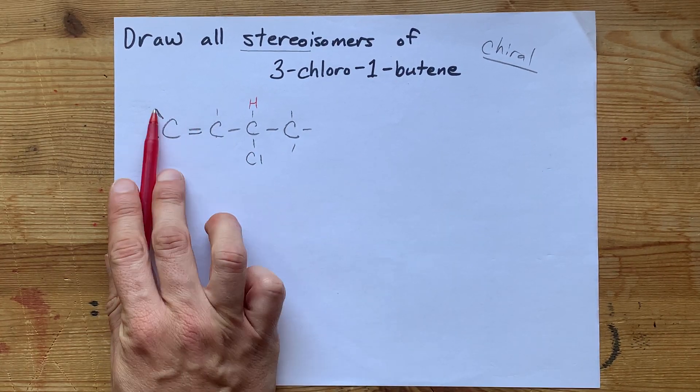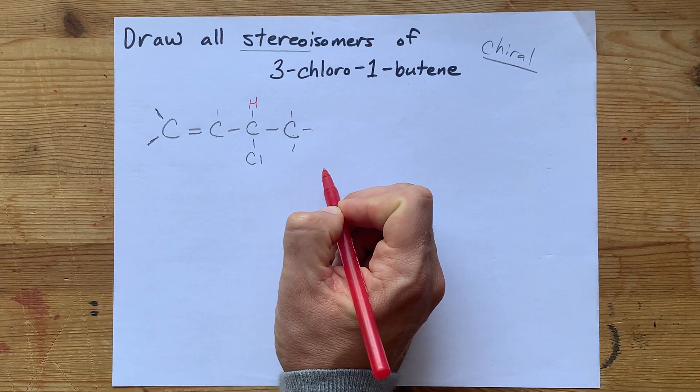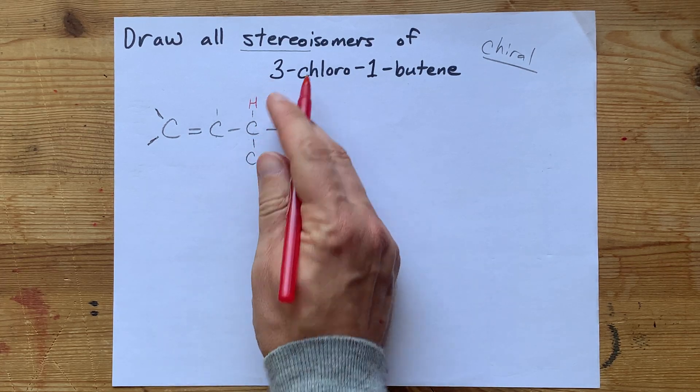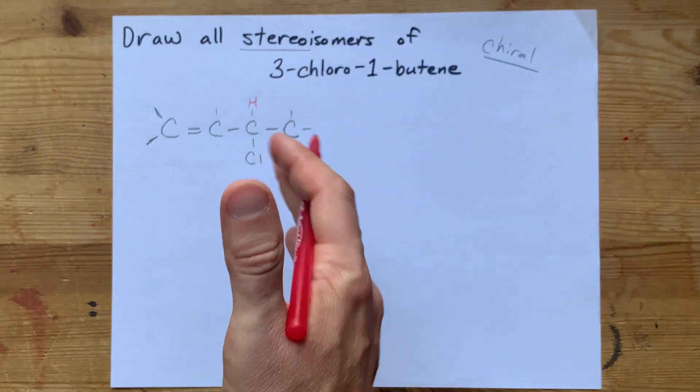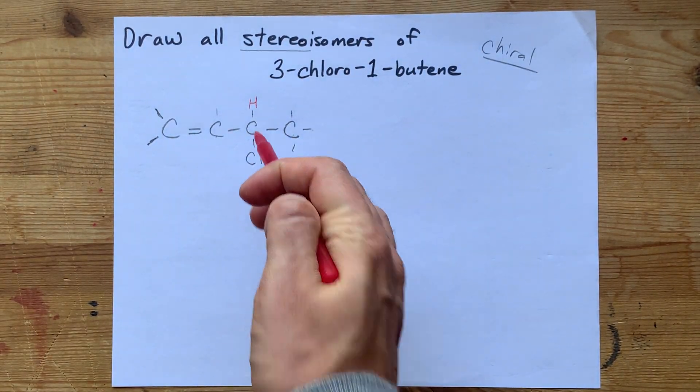One of them is a C2H3 group. One of them is a CH3 group. One of them is a Cl, and one's an H. Because all four of those are different, it means I do have chirality or a stereocenter there.